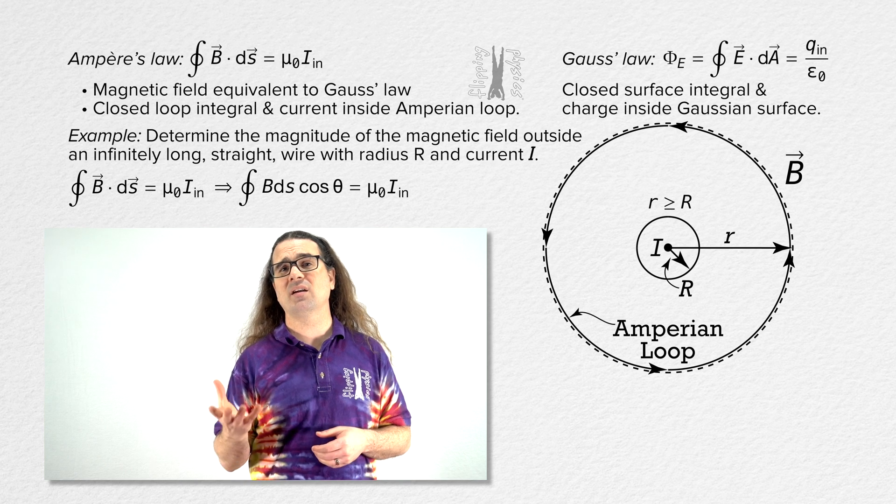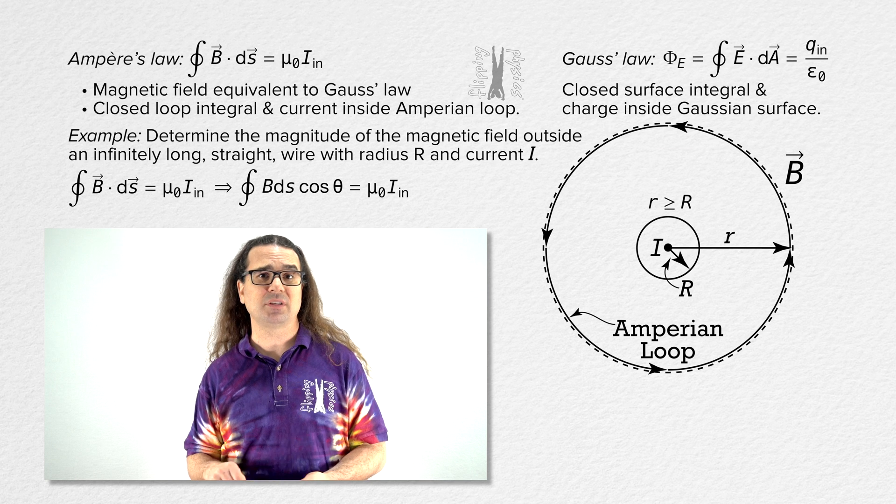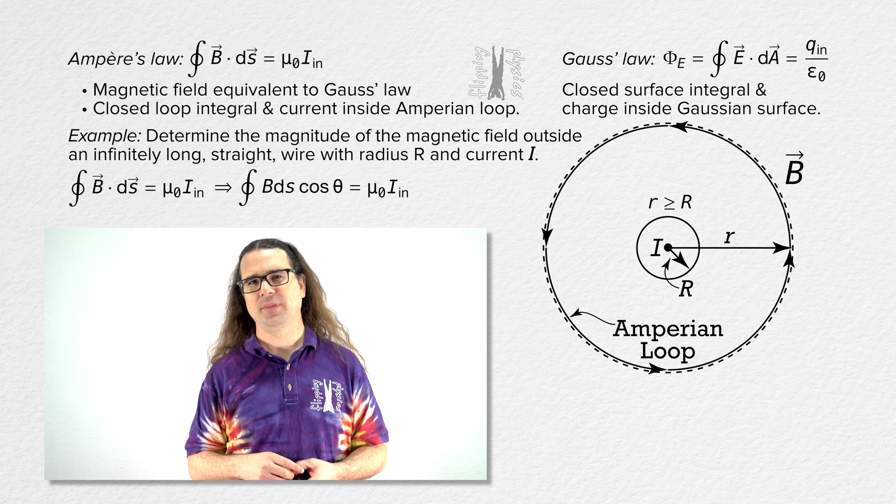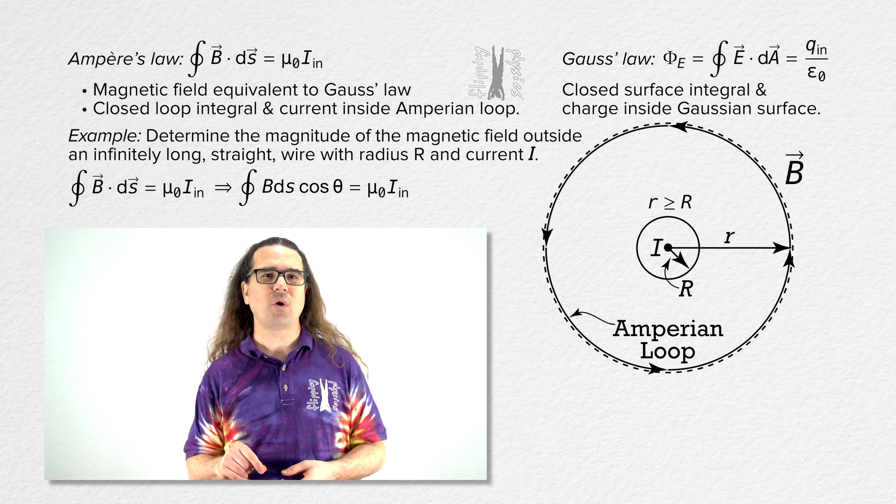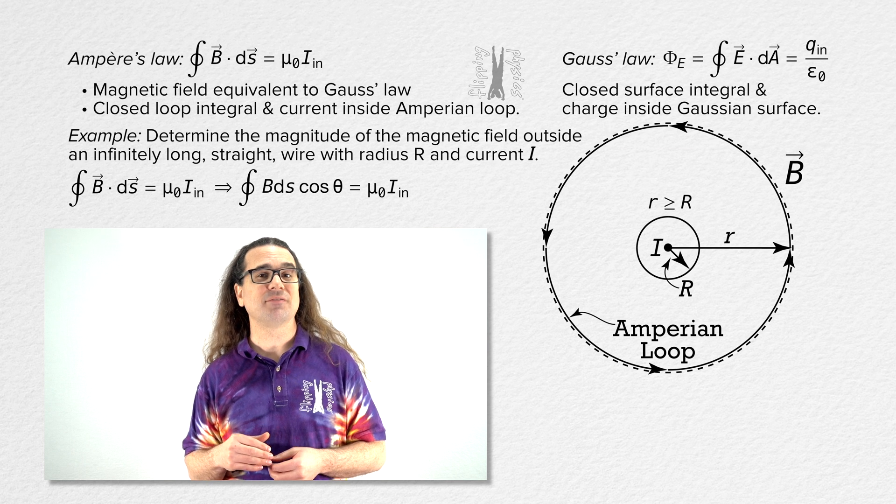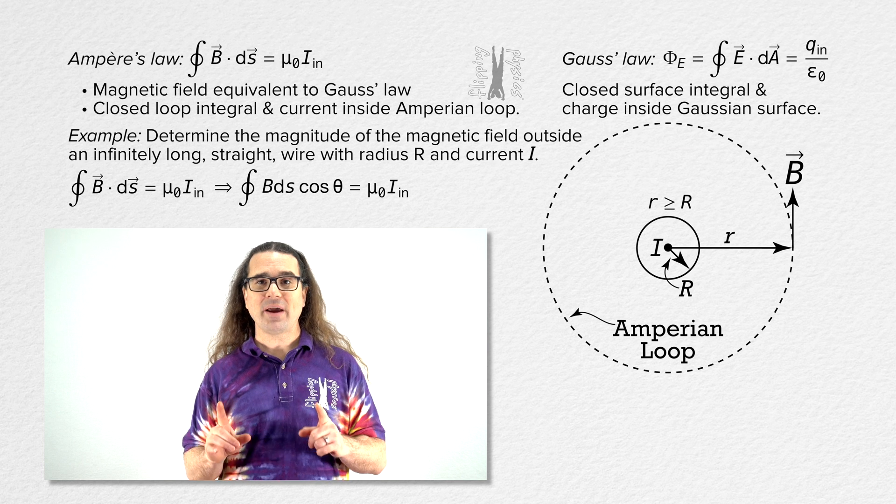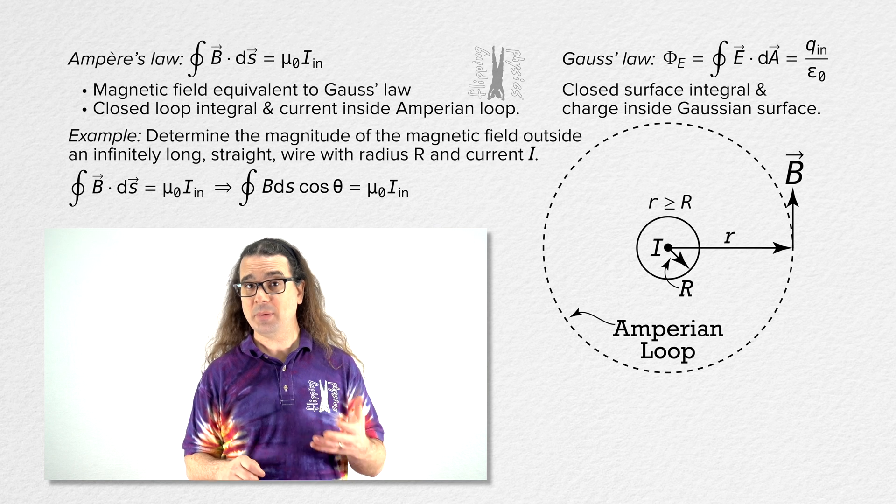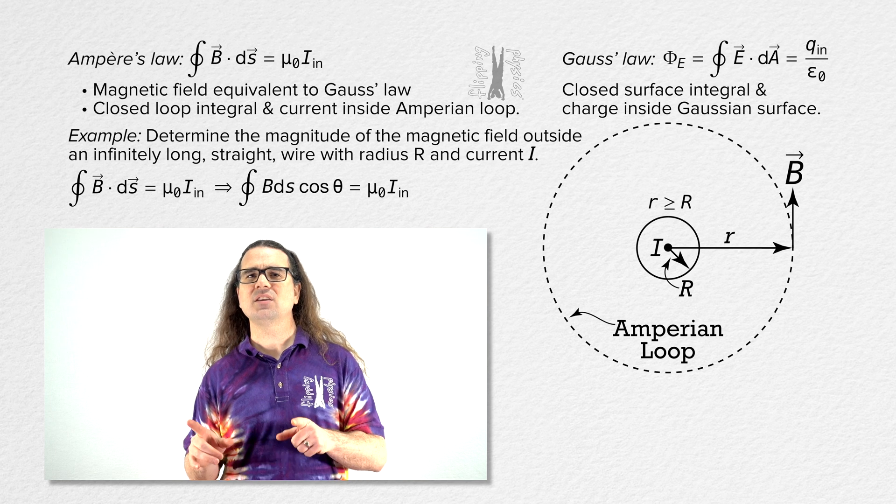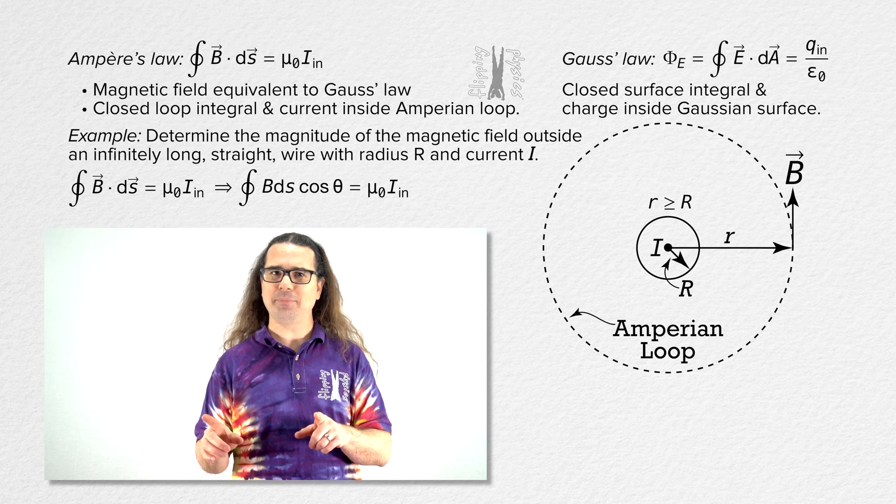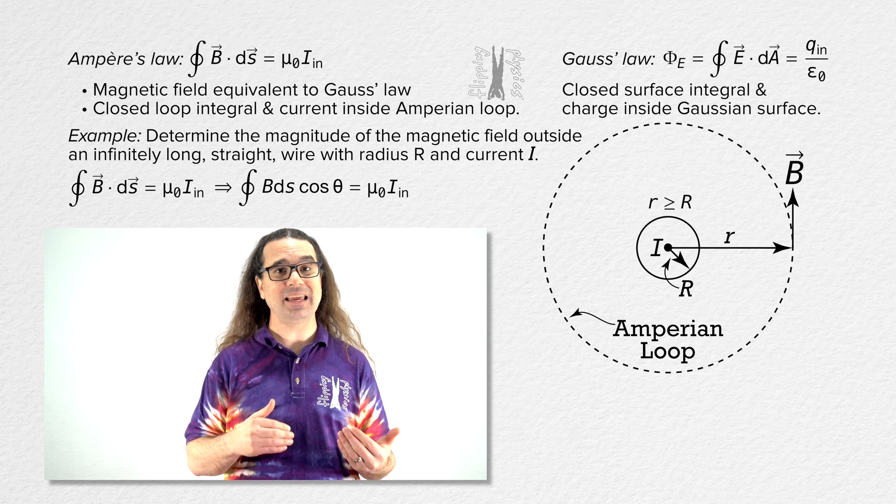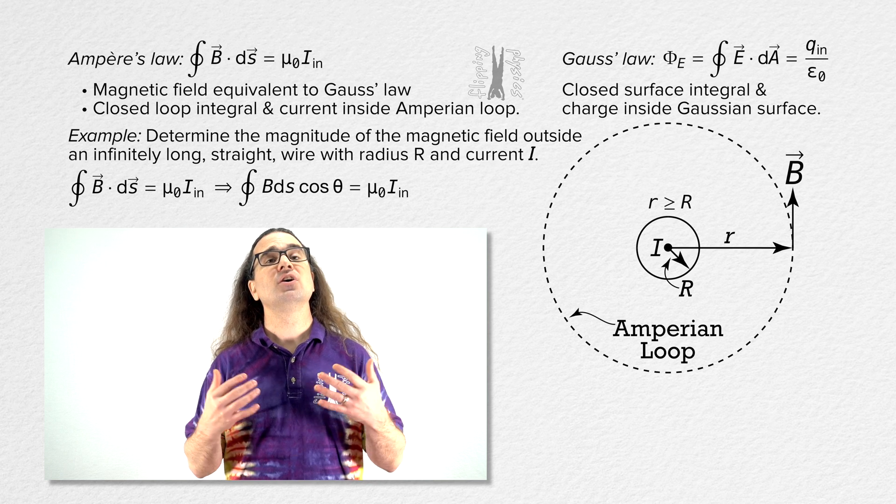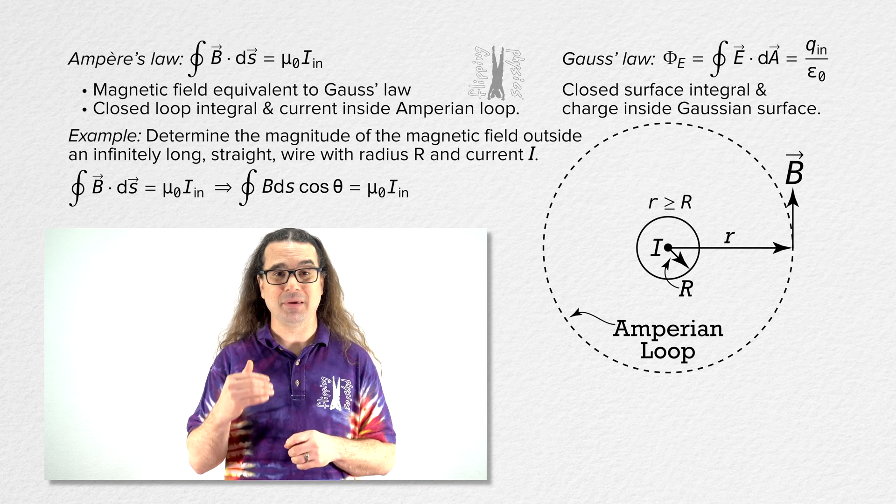Now, in order to use Ampere's Law, we need to pick a specific point on the Ampereian loop. Let's pick directly to the right of the wire. At that location, the magnetic field is up. The direction of ds, an infinitesimally small displacement on the Ampereian loop, could be up or down at that location. It is convention when we have this option to have ds be in the same direction as the magnetic field, so let's have ds be up.